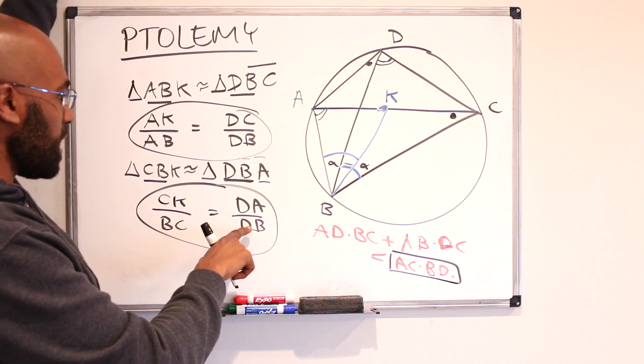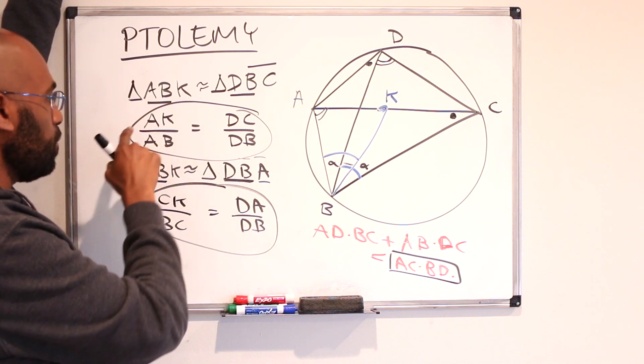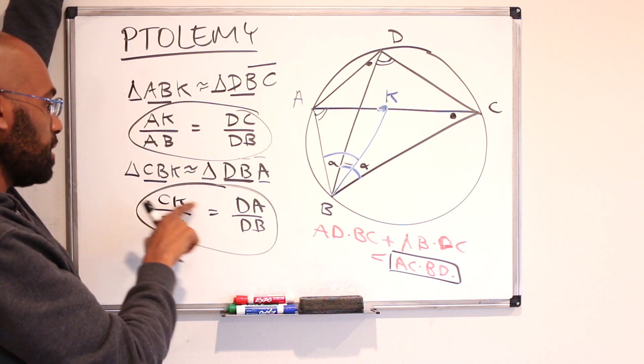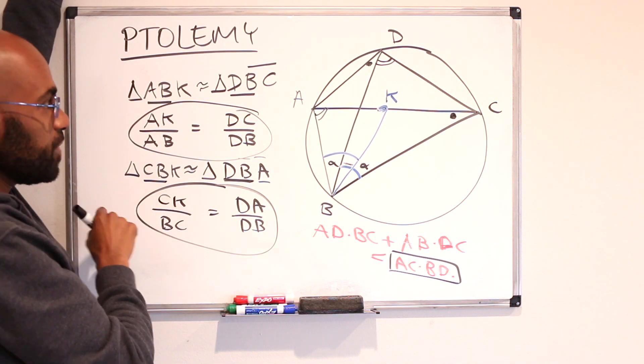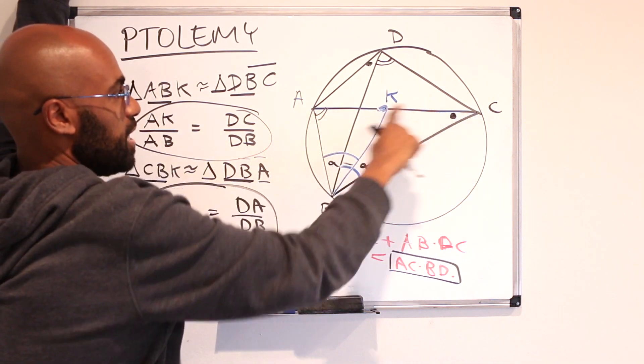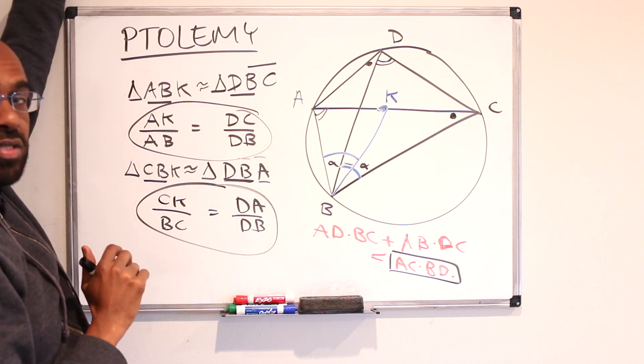If we multiply these by DB we'll get an expression for AK times BD and CK times BD and AK plus CK is actually all of AC so that'll help us.